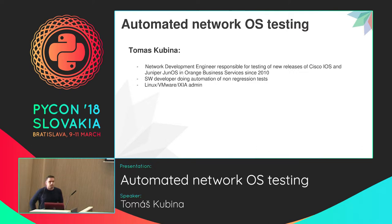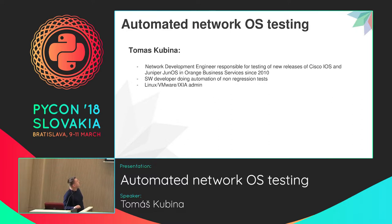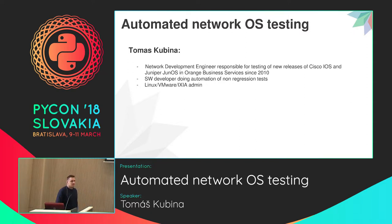So who am I? I'm basically a network development engineer. I started as a tester of network operating systems, which basically means Cisco IOS and Juniper JunOS. Is there anybody who is working on a daily basis with one of these two systems? I'm working at OBS since 2010, and around two or three years ago, I started to work as a software developer on various projects related to automation mainly. I'm also responsible for some Linux, VMware, and XE administration.